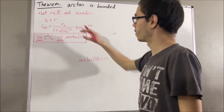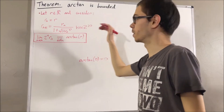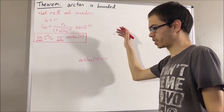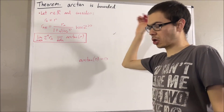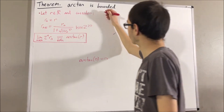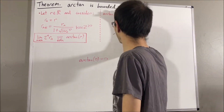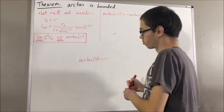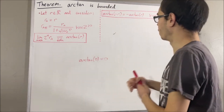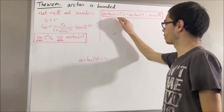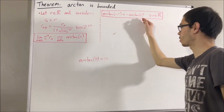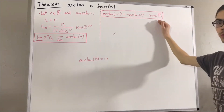From here we proved several properties of the arctangent function, one of which is that the arctangent function is an odd function. In other words, we proved that arctangent of negative r is equal to negative arctangent of r for all real numbers r.